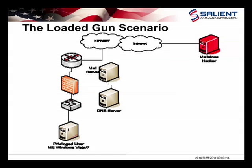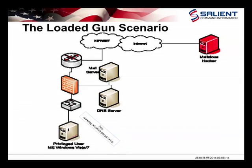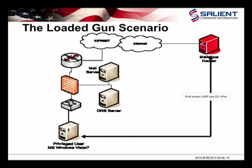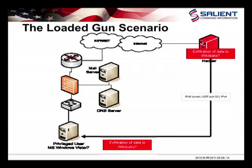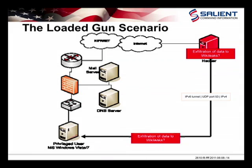A privileged user on Windows Vista or 7 is browsing the internet, generating thousands of DNS queries visible on the internet. That malicious hacker starts sending spam to the mail server, and it only takes that one privileged user to install the malware. During that installation, a tunnel is set up back to the malicious hacker, and data exfiltration begins. WikiLeaks is a perfect example of what's feared in the United States government, especially since it's an IPv6-enabled platform.